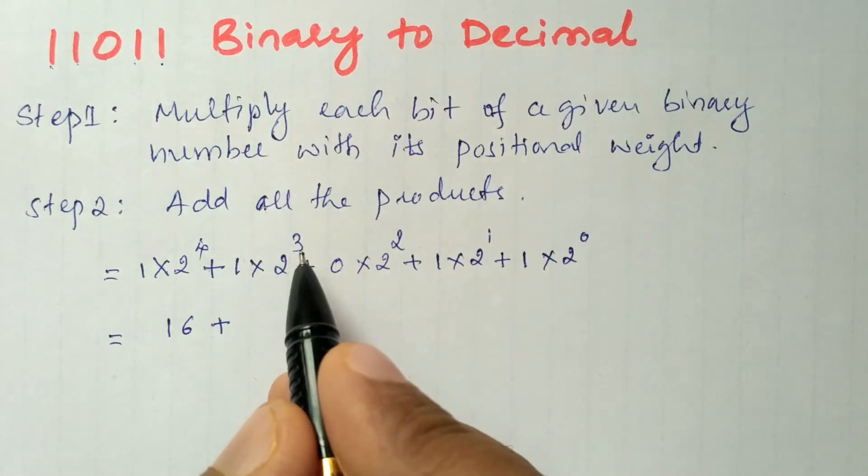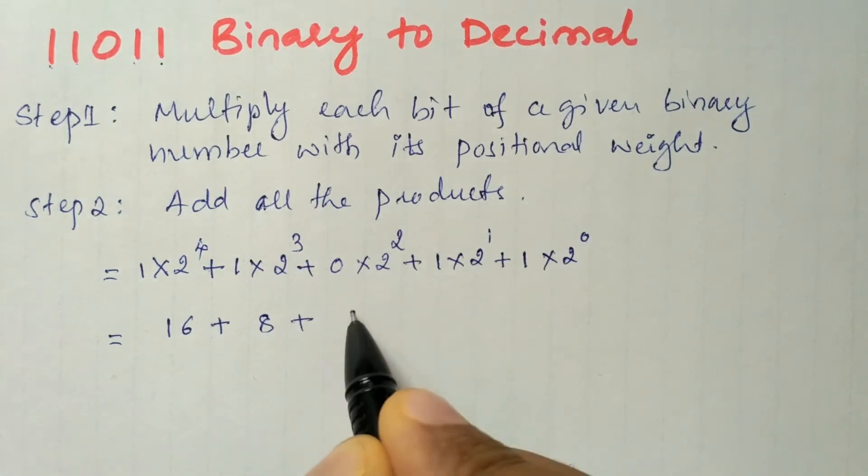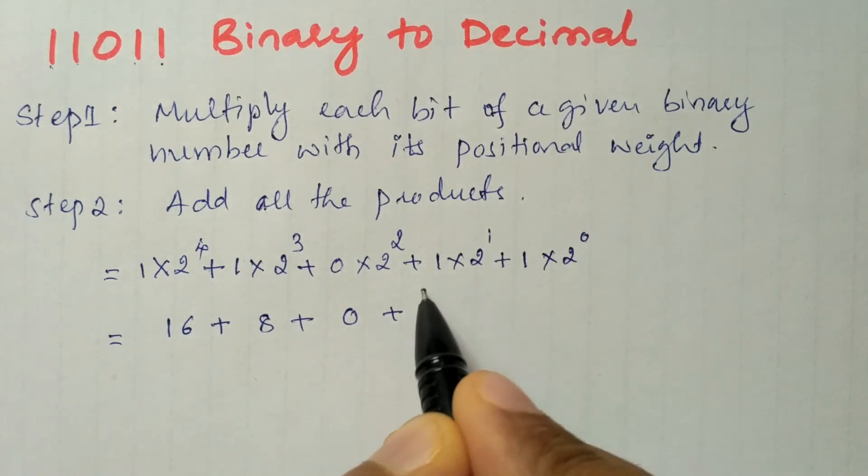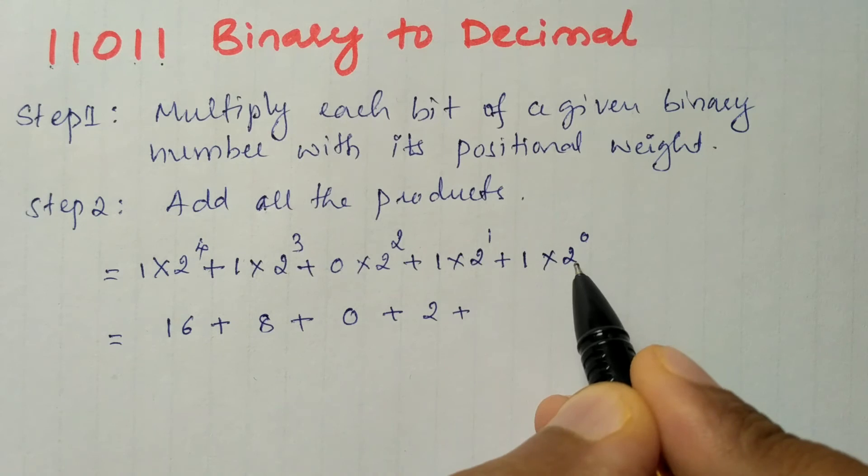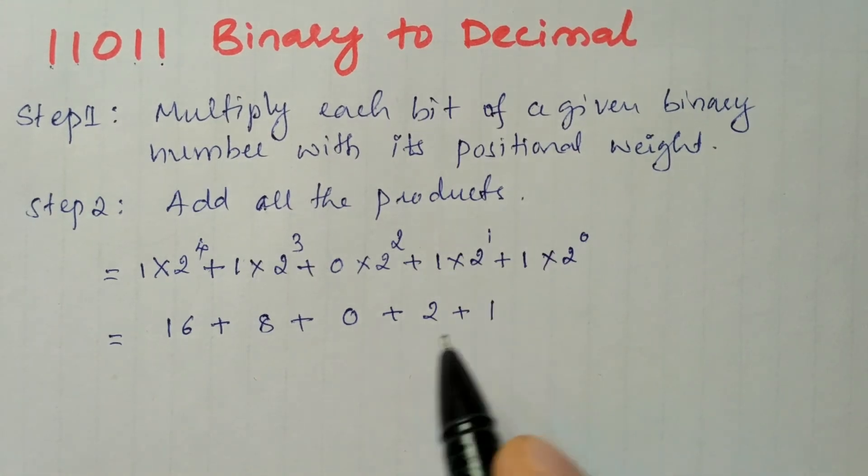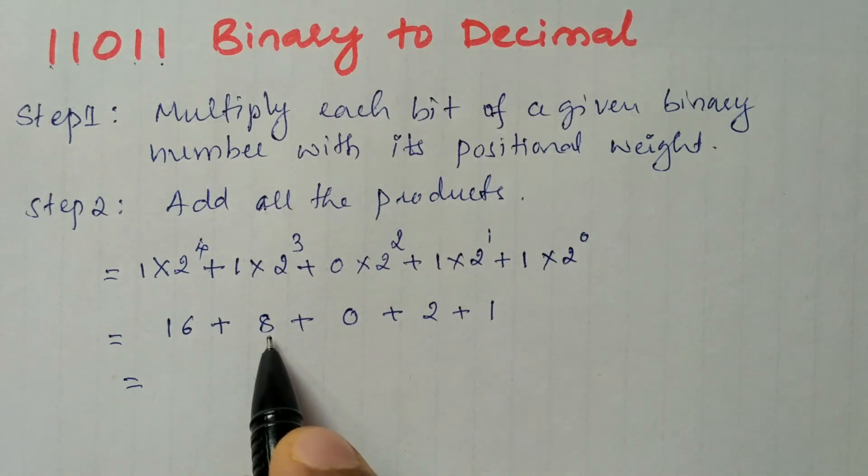Plus 2^1 is 2. Plus 2^0: anything raised to 0 is 1. 1×1 is 1. Now let us further simplify. 16+8 is 24.